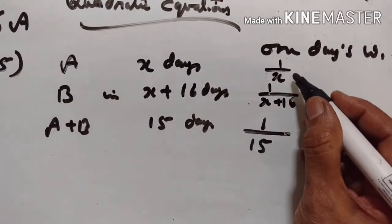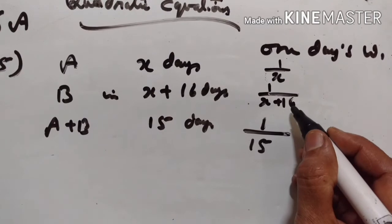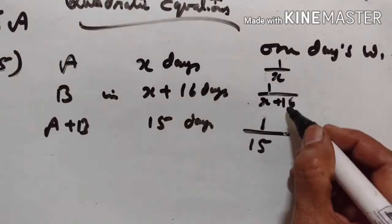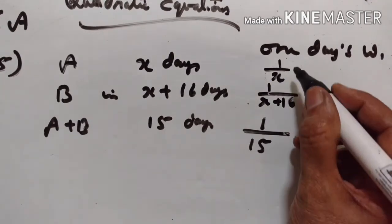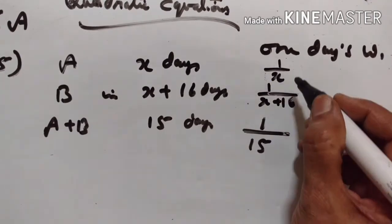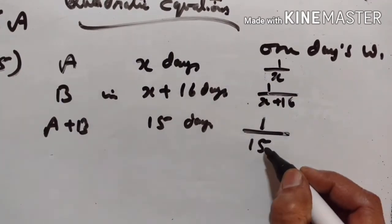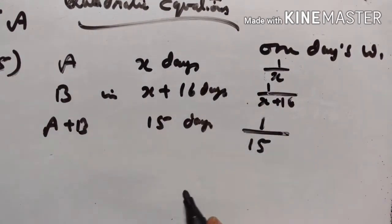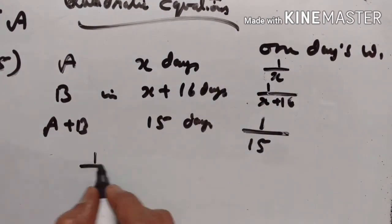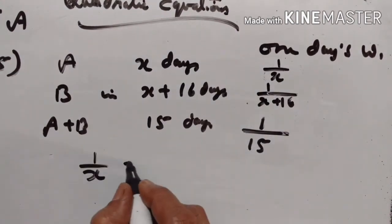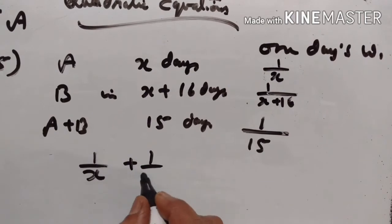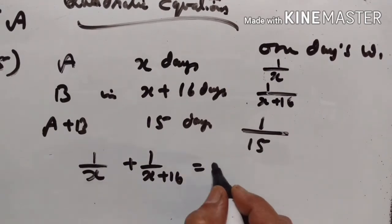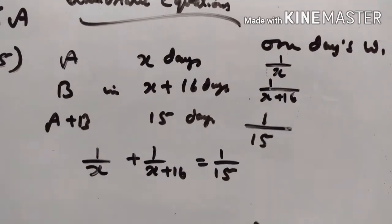This is one day's work of A and one day's work of B. If they work together, their one day's work is equal to one upon 15, so these should add up to one upon 15. Therefore: one upon x plus one upon x plus 16 is equal to one upon 15.